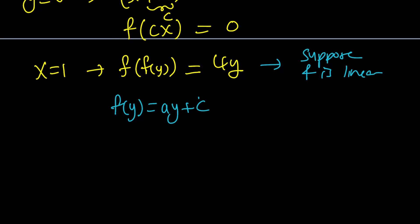And this will be by definition a times (ay plus c) plus c and that will be a squared y plus ac plus c. And we want this to be 4y.